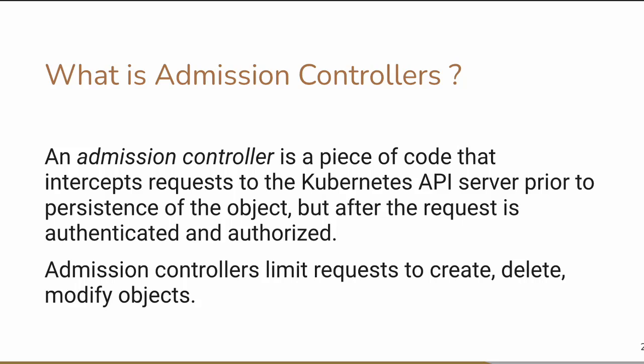The admission controller limits our create, delete, and modify object operations. Whenever you interact — say you give a command using kubectl — it converts that command into a background API request served by the API server. After your authentication and authorization have taken place via the config file, the admission controller controls your request whenever you are trying to create, delete, or modify some object. It sits in between before your request can be fulfilled.